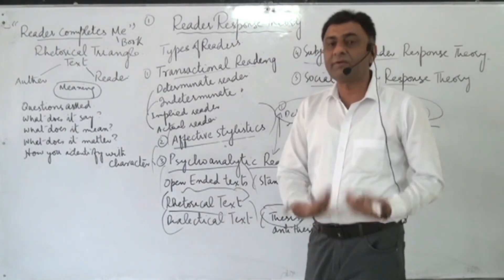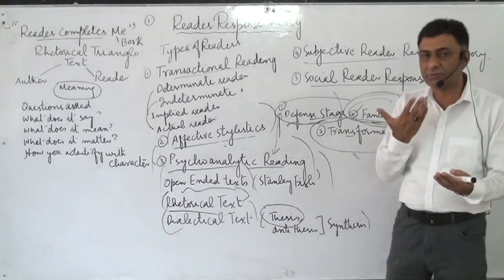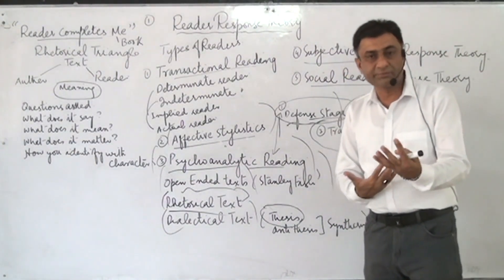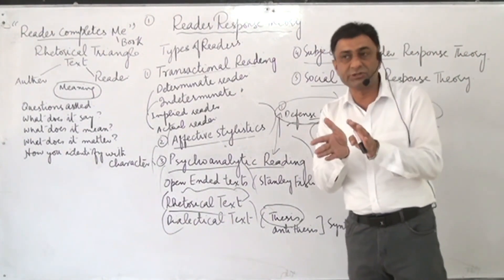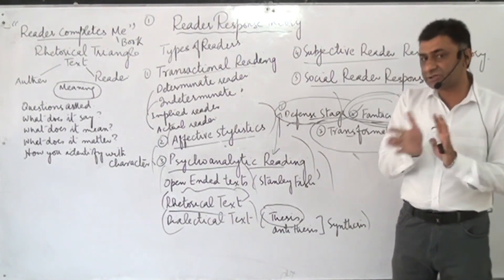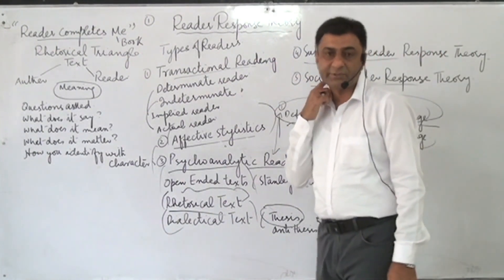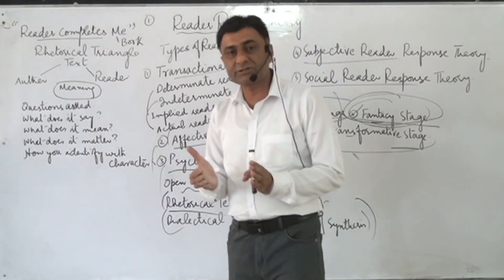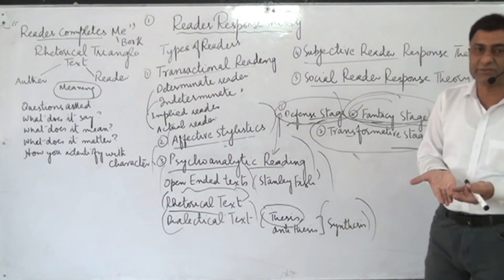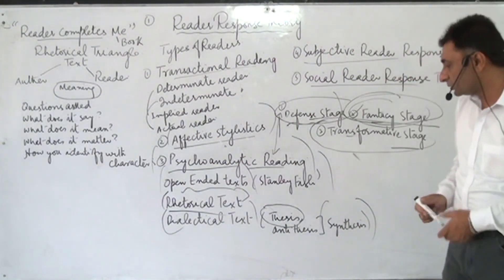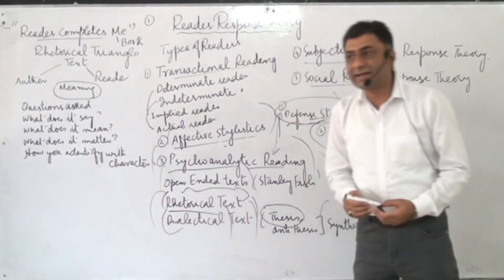In dialectical text, the reader is involved in antithesis — the reader does not accept the text on face value, and whatever the reader thinks constitutes the antithesis. When thesis and antithesis start merging, the reader arrives at a synthesis — the possible meanings of the text. That synthesis can itself become a new thesis, followed by another antithesis and another synthesis. This process goes on and on.